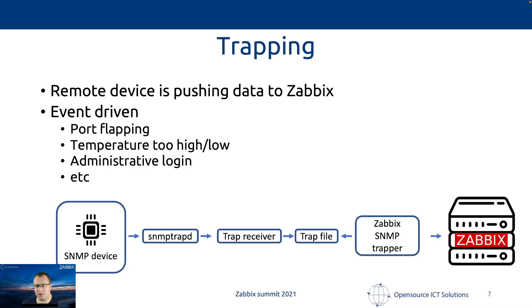In order to get that going, we have a few components that should cooperate. On the left we have an SNMP device pushing data towards Zebix. On the Zebix server side, we need SNMP TrapD — the daemon listening on the specific port — which pushes data into a trap receiver. The trap receiver processes the data and writes it into a trap file. From there, the Zebix SNMP trapper picks it up, pushes it into the Zebix server daemon, and it becomes visible in your Zebix frontend.